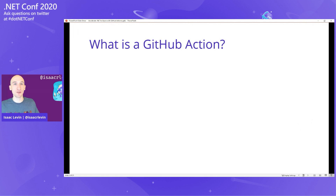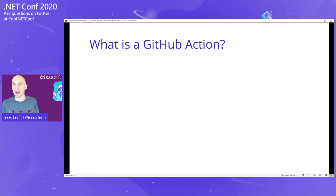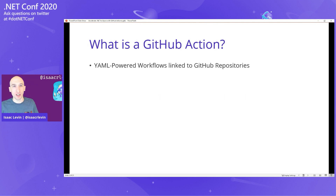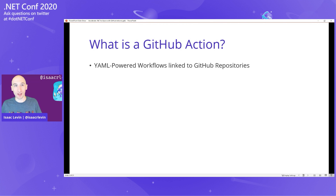Now we have a new thing called GitHub Actions. A lot of people ask me, Isaac, what exactly is a GitHub Action? GitHub Actions is a YAML-powered workflow linked to your Git repositories — yet another markup language powered. I know people have some concerns with YAML. I had some concerns with YAML too. I like YAML now, and I can work pretty seamlessly in YAML after spending some time in it.